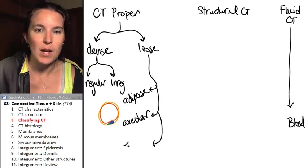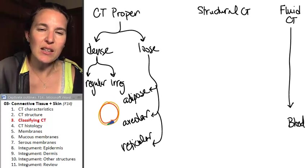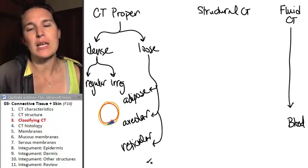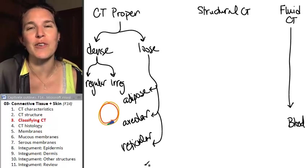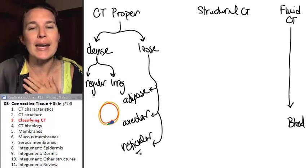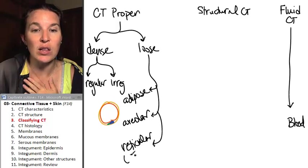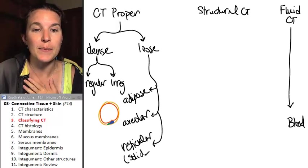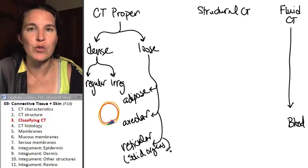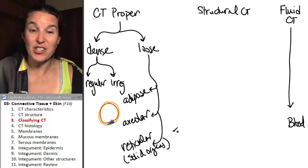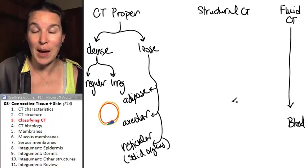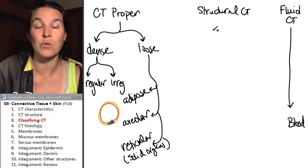Last one, reticular. Reticular connective tissue is made out of reticular fibers. Hallelujah. And it's found in solid organs. And those solid organs are things like lymph nodes or the spleen. We're not actually going to see it in lab, but we do need to learn about it.